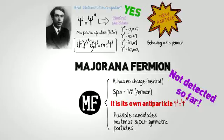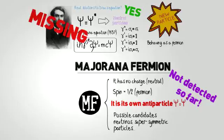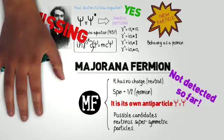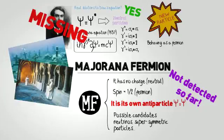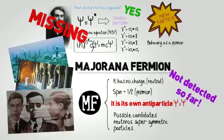Majorana got obsessed with this topic, spending hours trying to solve it. And one day, at the age of 32, he simply disappeared. Nobody knows where he went, but there are several hypotheses. He may have jumped off a boat and drowned, or he might have joined a monastery and become a monk. Some even say he ran away and got a new identity, living undercover the rest of his life.